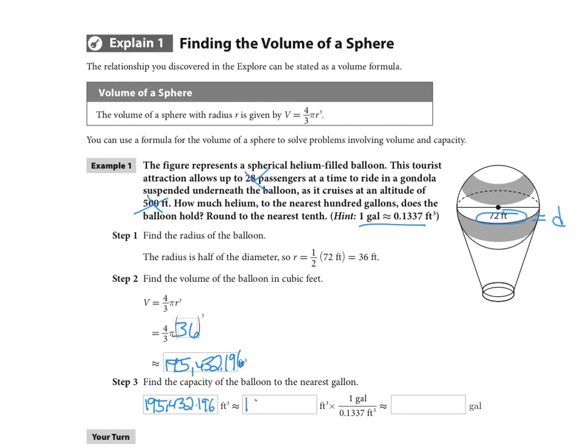And we're going to multiply that by the conversion factor. We of course want feet cubed to cancel out, so we're going to put the feet cubed portion of the conversion into the denominator. So that actually means we're dividing by 0.1337, and so we can expect this number to get even bigger, and it does.